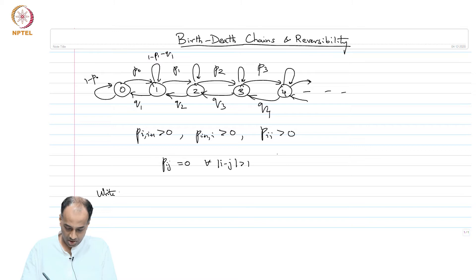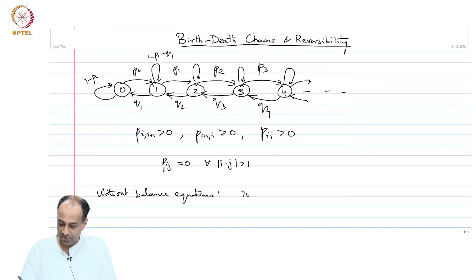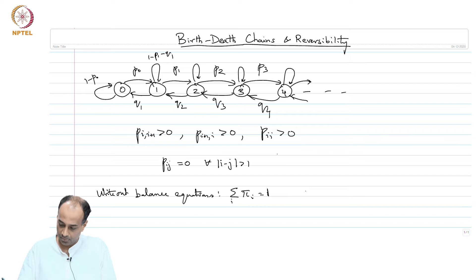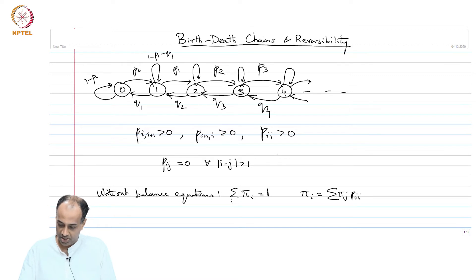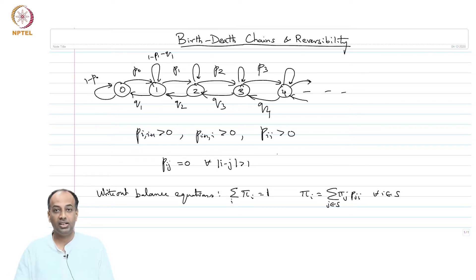So let us write out the balance equations. What are the balance equations? You should have sum over j of pi_j * P(j,i) for all i. These are the balance equations.